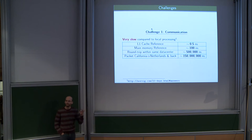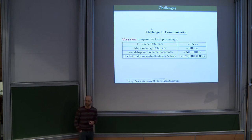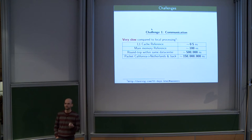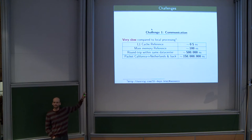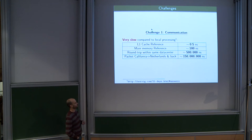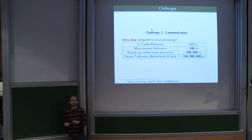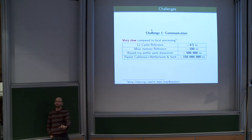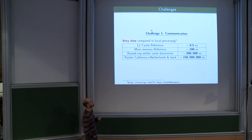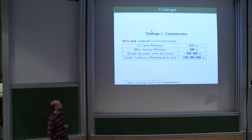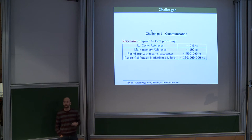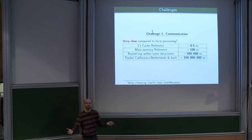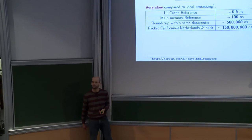There are several challenges when doing learning and optimization in a distributed setting. The first is the issue of communication. Whether it's cores on the same CPU or a geographically distributed computing grid, communication is always much slower than local processing — it takes much more time to send data between machines compared to each machine doing something locally. Usually this is orders of magnitude difference, so we want algorithms that communicate as little as possible.